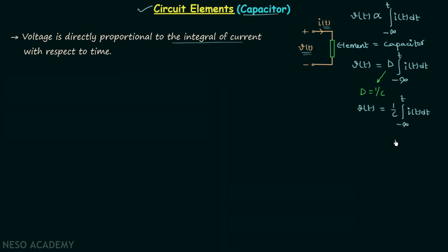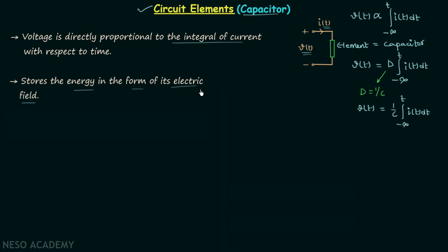We design a capacitor to store energy in the form of its electric field. If you remember, in the case of inductors we design the inductor to store energy in the form of its magnetic field, but here the capacitor stores energy in the form of its electric field. The unit of capacitance is Farad, and capacitance is defined as the amount of charge required to increase the potential of a conductor by one volt when the conductor is kept in free space.